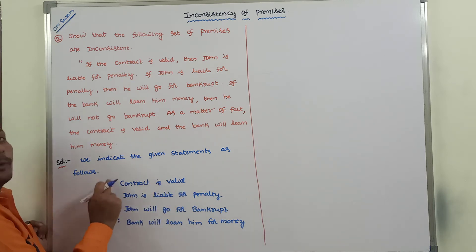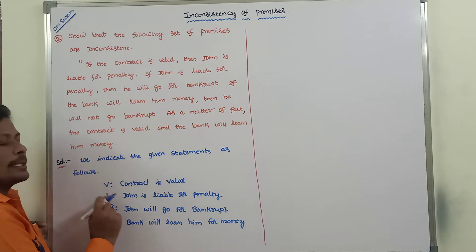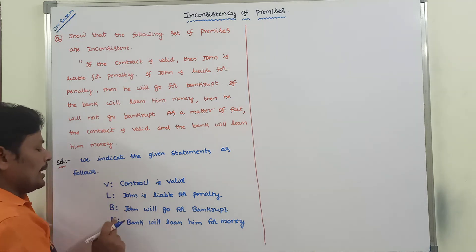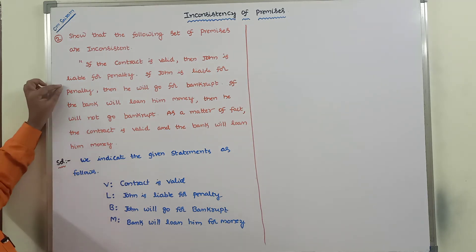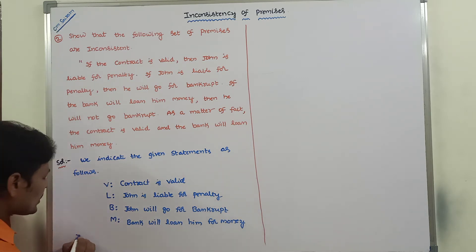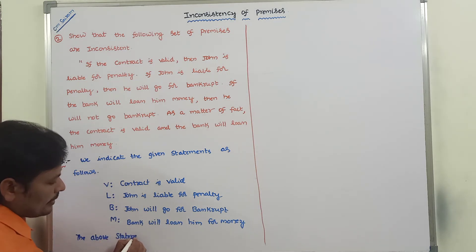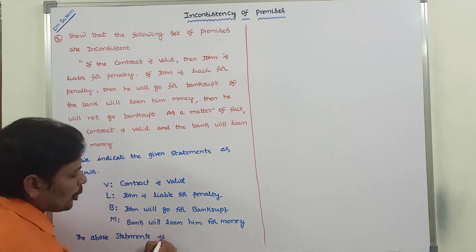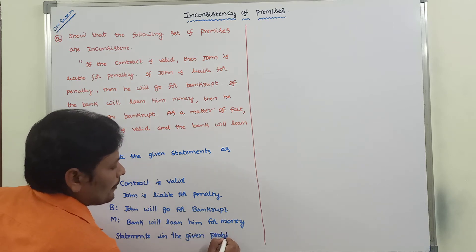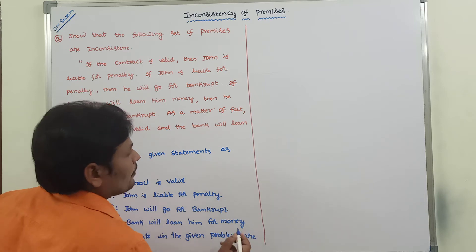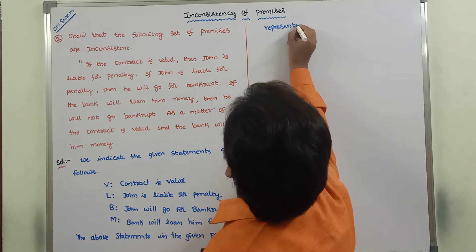So each and every unique statement can be represented by one uppercase letter: contract is valid is denoted by V, John is liable for penalty is denoted by L, John will go for bankrupt is denoted by B, and bank will loan him money is denoted by M. By using these letters, we can represent the given statements in symbolic form.